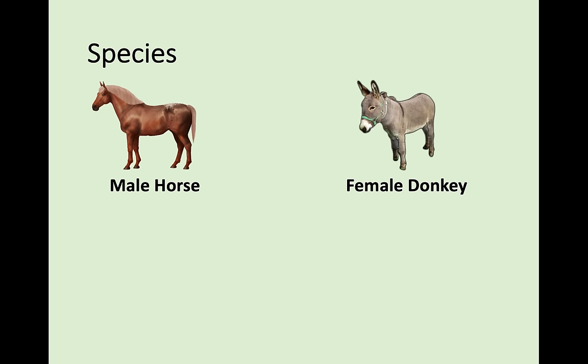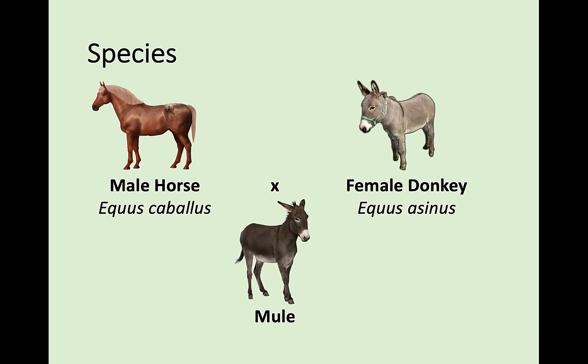What is different is if you have a male horse, Equus caballus, and a female donkey, Equus asinus — they are different species. They can reproduce, but their offspring, the mule, is infertile. Therefore they are different species. The mule exists but will not be able to produce other mules — it is infertile.